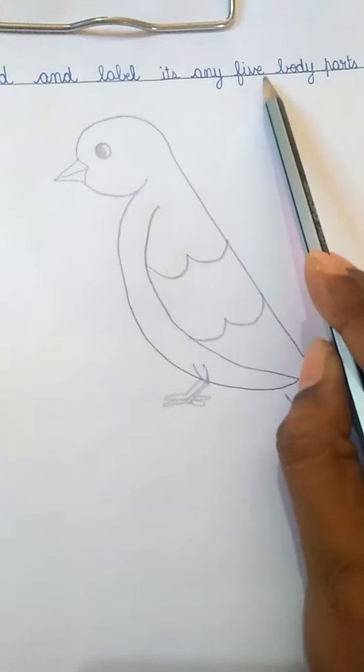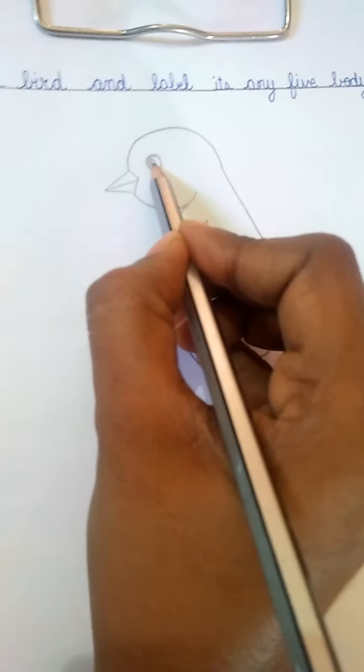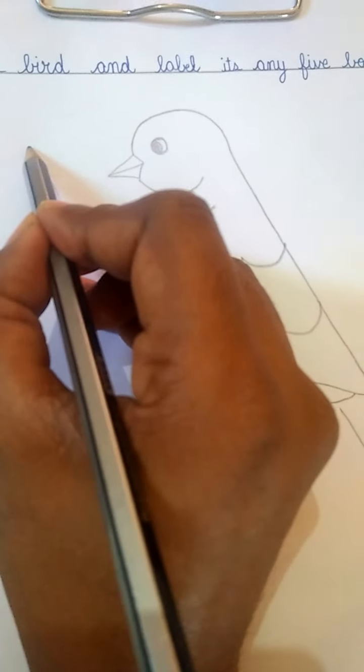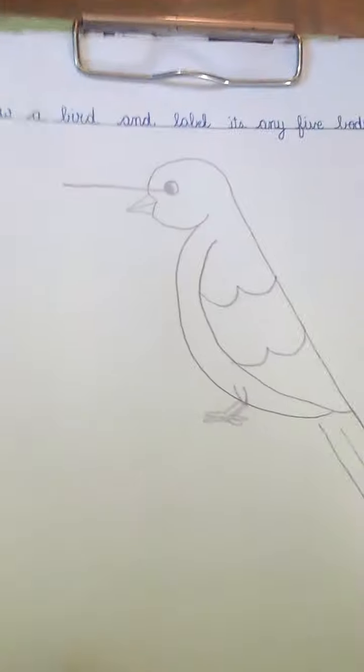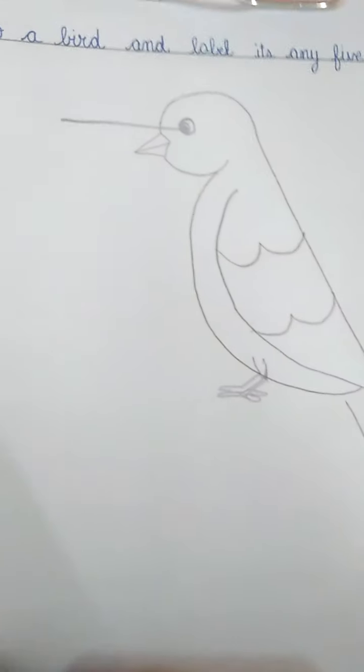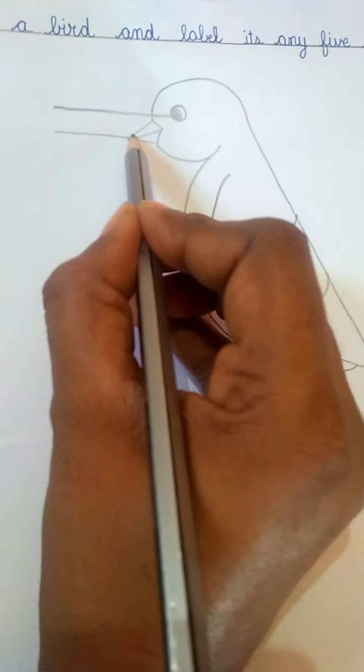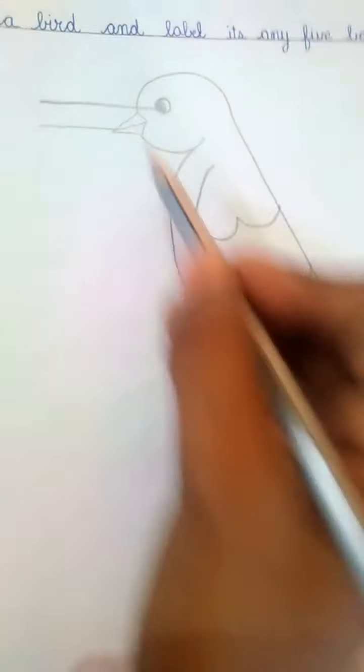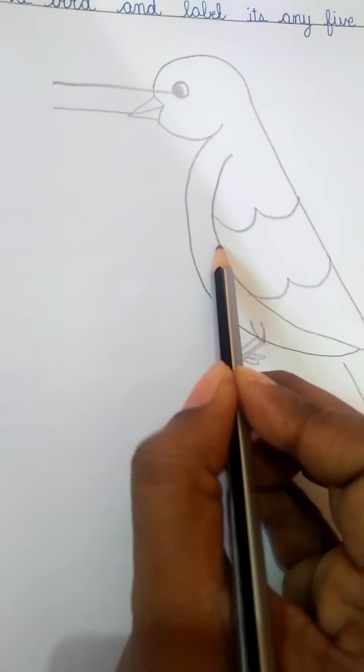Now come to the labeling part. We have to label any five parts, so let's take the easiest ones. The eye - and we will label it on one side only, okay? It will make our drawing look neat. The second one should be the beak. You may take the help of a ruler to draw such lines. Now the next one, the wings. So we'll draw a straight line to show the wings.